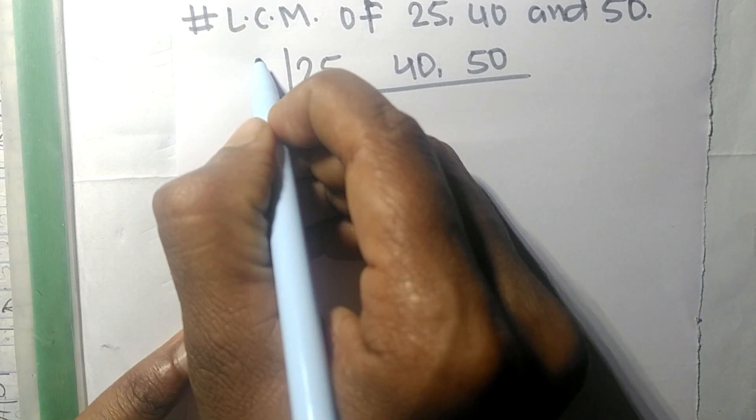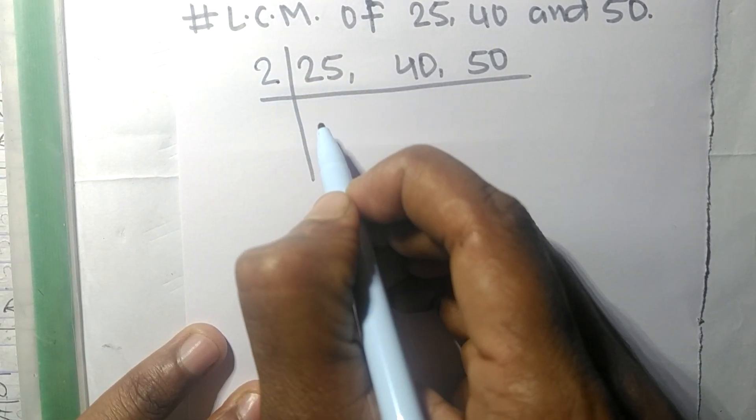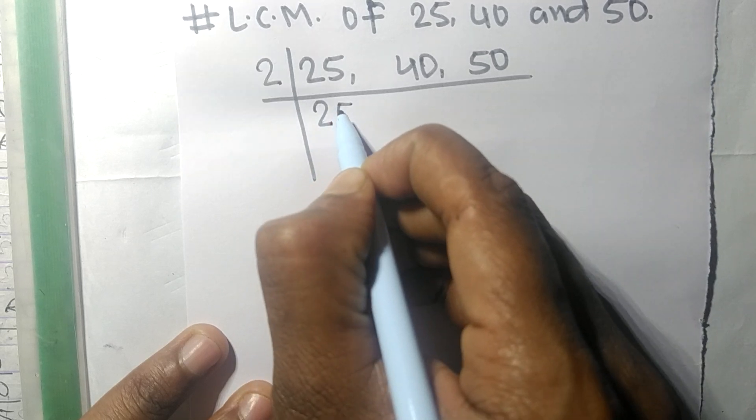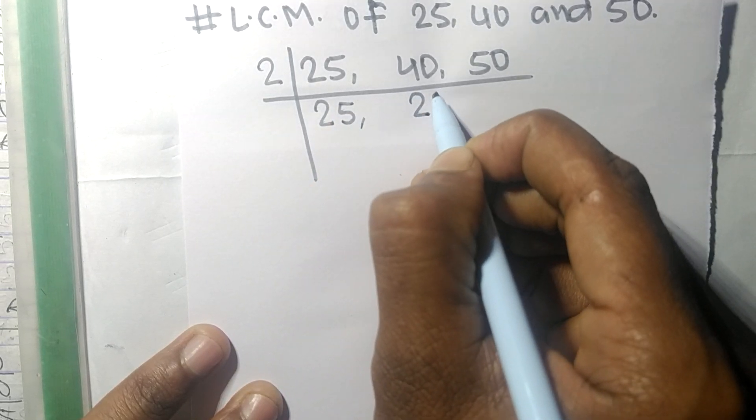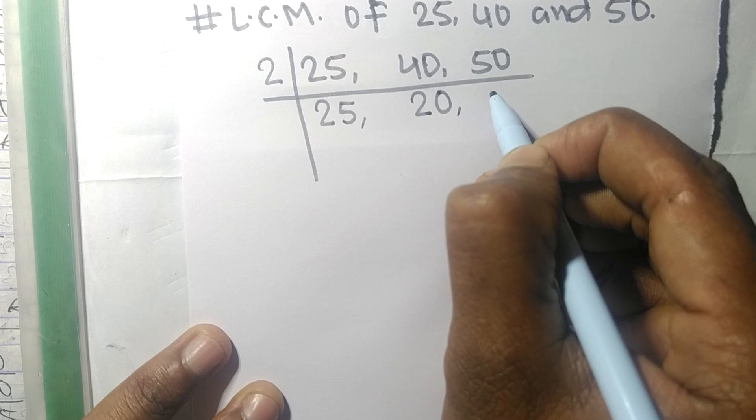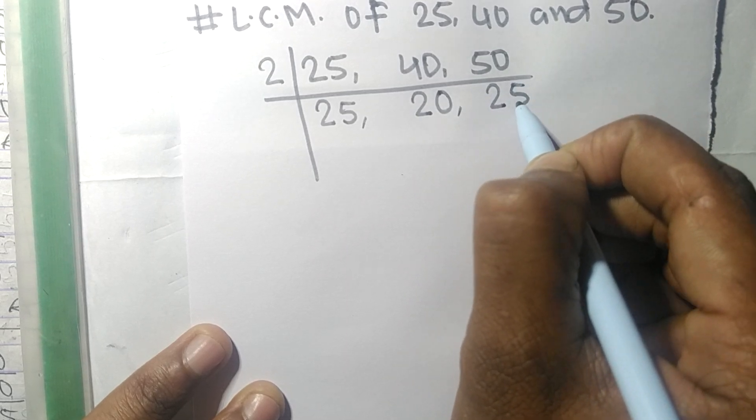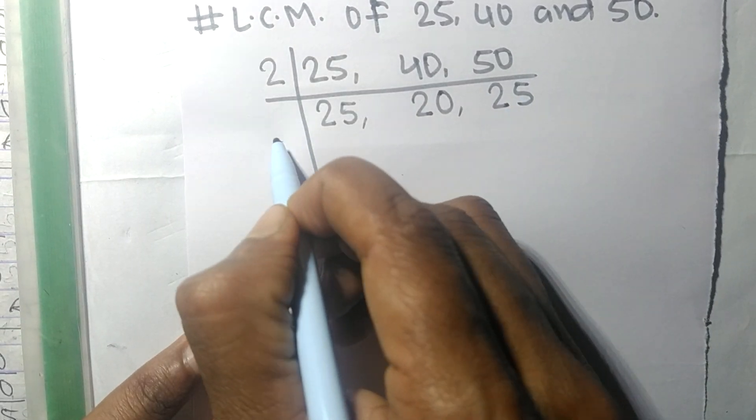25 is not divisible by 2, so it is same. 2 times 20 means 40, 2 times 25 means 50.